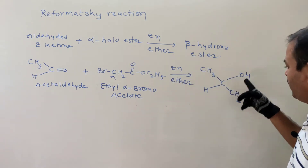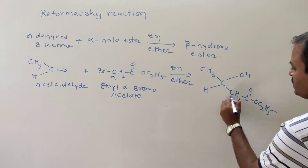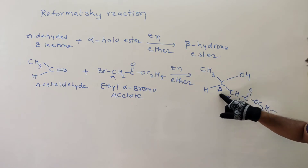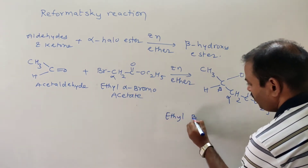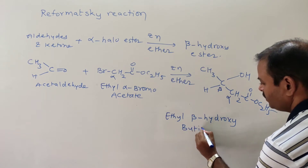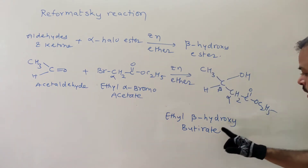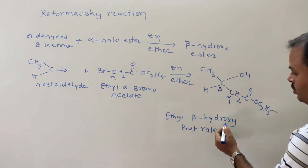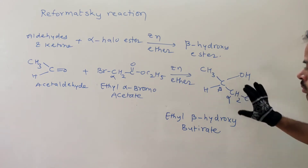The product CH₃CHOHCH₂COOC₂H₅ is a beta-hydroxyester — the OH group is at the beta-position relative to the ester carbonyl group. The name of this compound is ethyl beta-hydroxybutyrate: counting 1, 2, 3, 4 carbons gives butyrate, with a hydroxy group at the beta position and an ethyl ester.